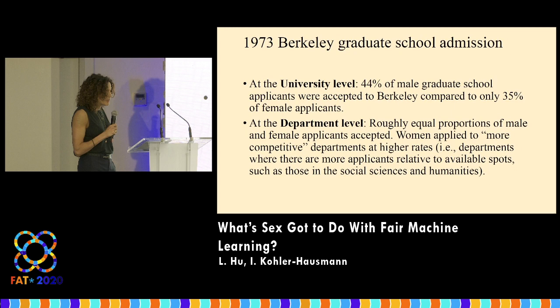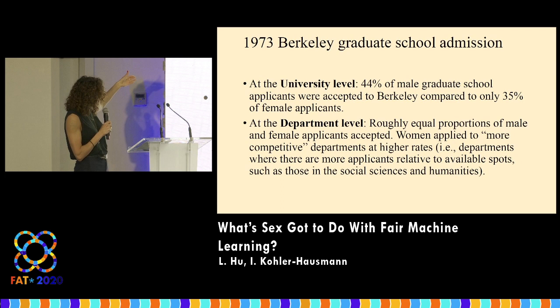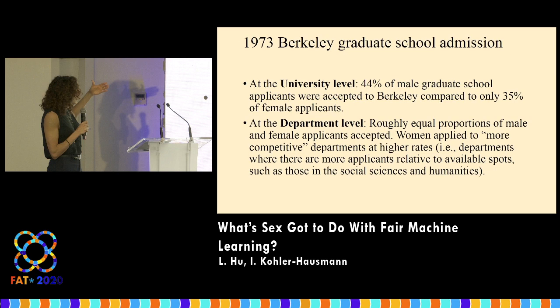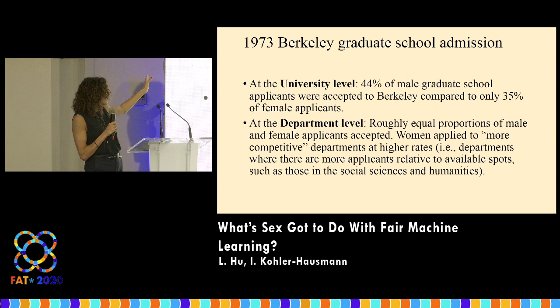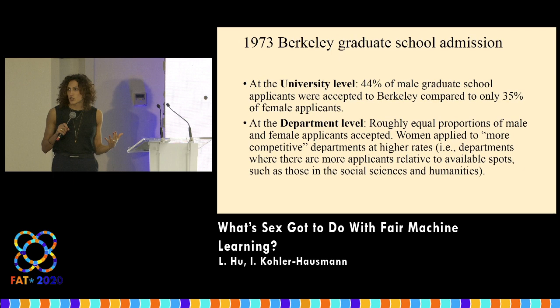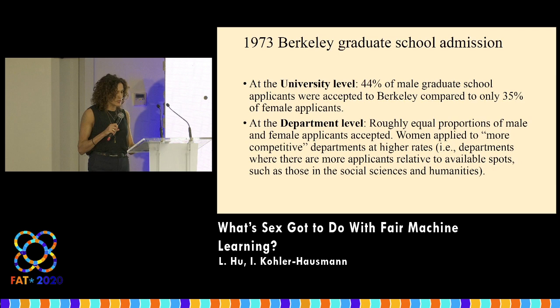If we look at just disparities, we realize it's indeterminate as to the normative question. The statistics alone don't tell us whether or not this pattern is an instance of discrimination. This was a 1973 study of admissions at Berkeley — more people sex-coded male are admitted and fewer sex-coded female, but if you control for or stratify at the department level, that disparity disappears.